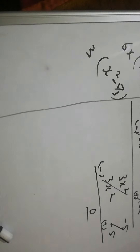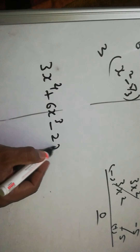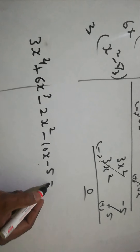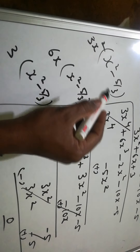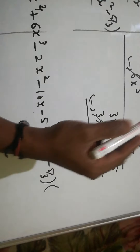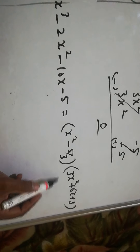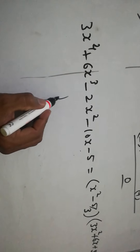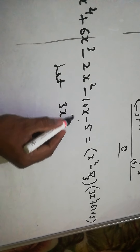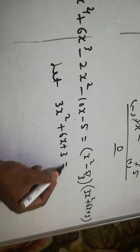Therefore we can write: 3x⁴ + 6x³ - 2x² - 10x - 5 = (x² - 5/3)(3x² + 6x + 3). The factor x² - 5/3 we already found, and 3x² + 6x + 3 is the new quotient we obtained.